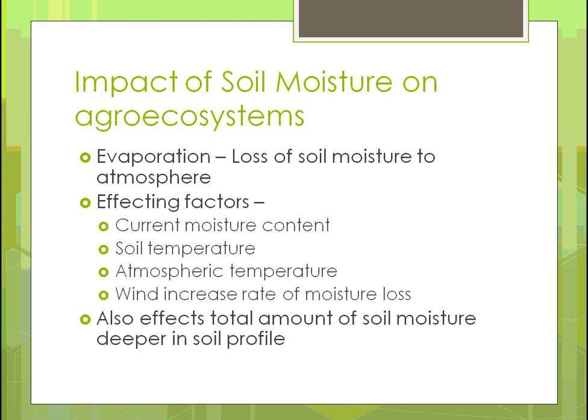Evaporation is the loss of moisture to the atmosphere. Factors that affect it include the current moisture content of the soil — if the soil is dry, there's not much to evaporate. Soil temperature also matters: the colder it is, the less water evaporates. Atmospheric temperature and wind also play roles — the higher the wind speed, the more water evaporates. High evaporation can reduce total soil moisture, meaning less moisture reaches deeper within the soil profile.